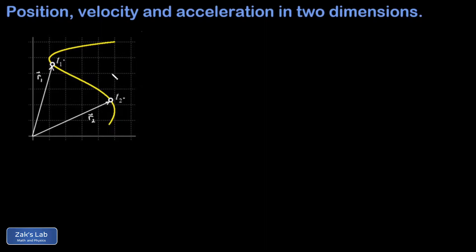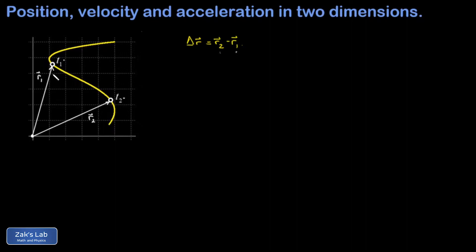After defining positions as vectors, the change in position or displacement keeps its old definition from one dimension, and we can write delta r equals r2 minus r1. A vector difference has a nice geometric interpretation — when I write down r2 minus r1, I can visualize that by putting the tails of the two vectors in the same place, which is already done since they come from the origin. That vector difference points from the head of r1 to the head of r2, simply pointing from the initial position to the final position, telling us the total direction the object moved and exactly how far it went.